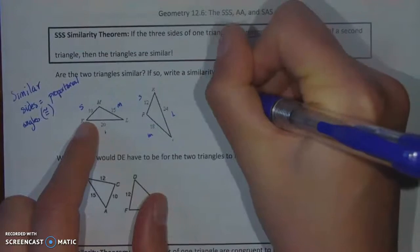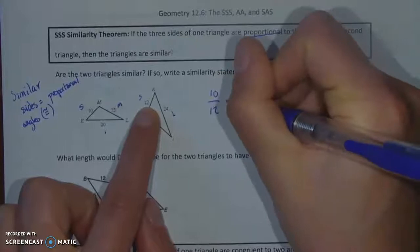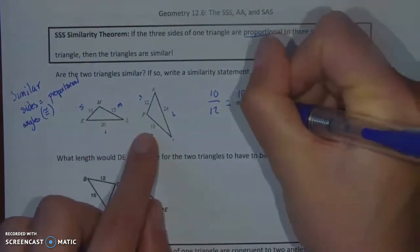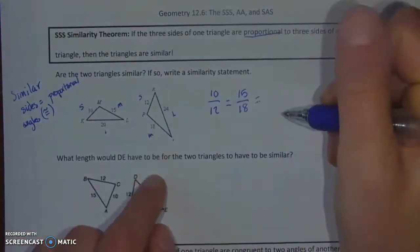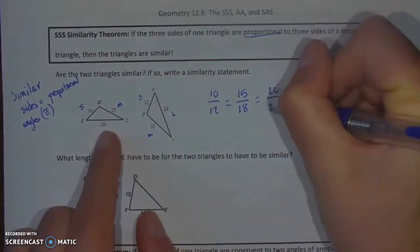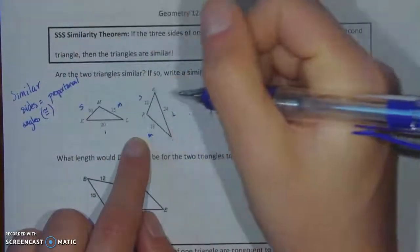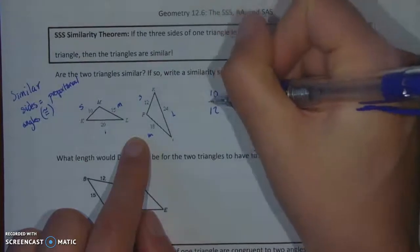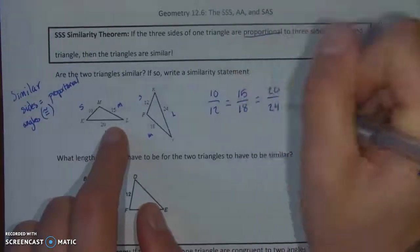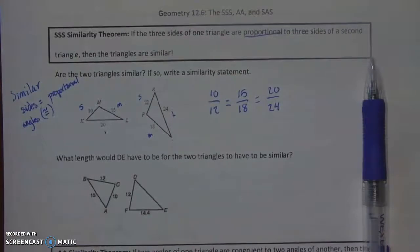So in this case I need to check that if 10 corresponds to 12, 10 over 12, does it have the same proportion as my 15 to my 18? And does that have the same proportion as my 20 to my 24? Now don't forget you should be looking at keeping this consistent. All the numbers from this triangle need to be on top or all the numbers in this triangle need to be on the bottom. You can't switch them back and forth otherwise things will go wrong.